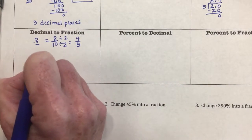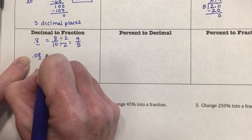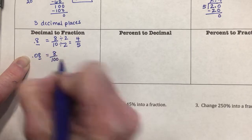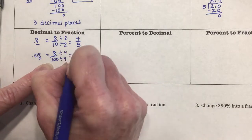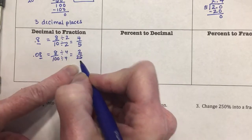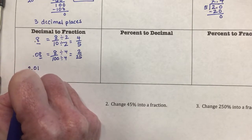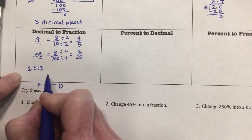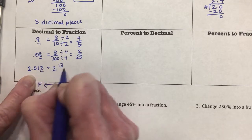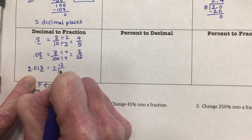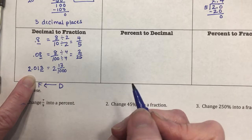For 0.08: the 8 is in the hundredths place, so I write it as 8 over 100. The common factor is 4 — dividing gives 2/25, which is simplified. You can do this for any decimal, even mixed numbers. For 2.013: the 2 is the whole number, and 13 is in the thousandths place, so this is 2 and 13/1000, which cannot be simplified.